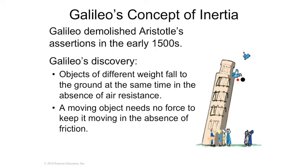A moving object doesn't need a force to keep it moving, if there were no friction. For instance, you could roll a ball across the floor and eventually it's going to stop — there must be a force opposing it. If there was no force at all opposing it, it would keep going forever. So that is the conception that all of us hold now, and it makes perfect sense. It's been tested a thousand million ways.